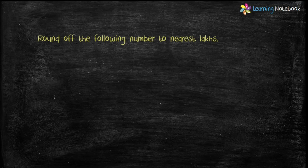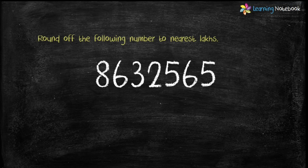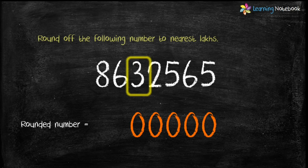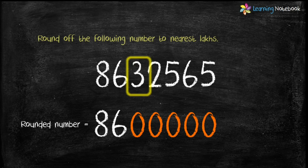Now let's round off the following number to the nearest lakh: 8632565. Note that the steps remain the same except we will now look at the ten-thousands place. Here the ten-thousands digit is 3, which is less than 5. So replace 32565 by 0 and keep the other digits as they are. The rounded number is 8600000.